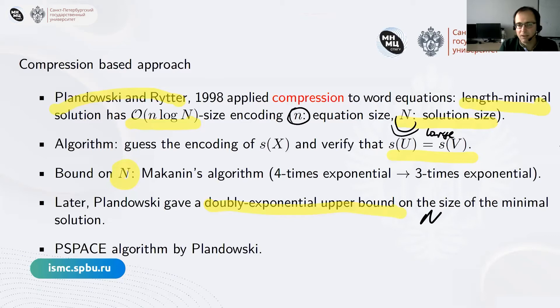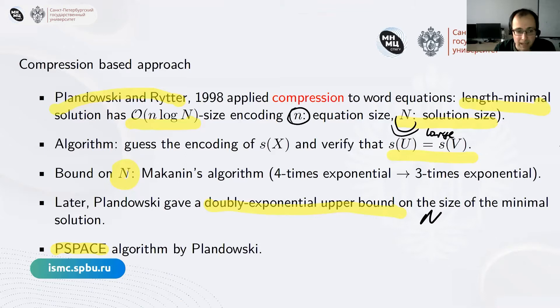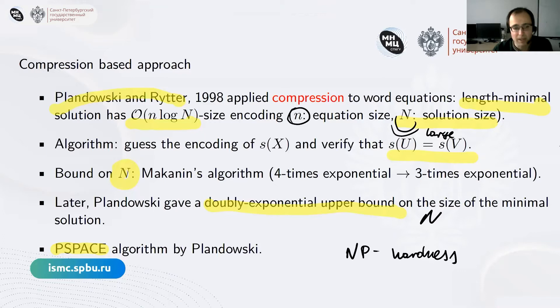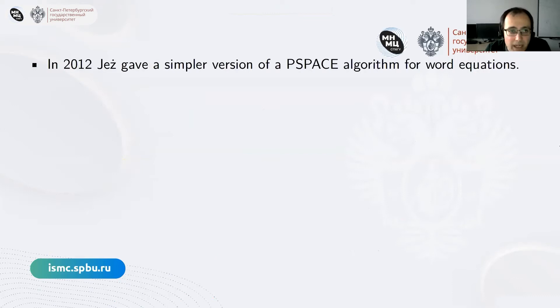The doubly exponential bound already improved the bound from Makanin's algorithm and could be used in Plandowski's algorithm. The bound and the algorithm were based on similar ideas but were different things, and by playing with them enough he showed they fit together well. In the end, Plandowski gave a P-space algorithm for this problem, which is the best result until today. We do not know if any better algorithm exists — the problem lies somewhere between NP and P-space.